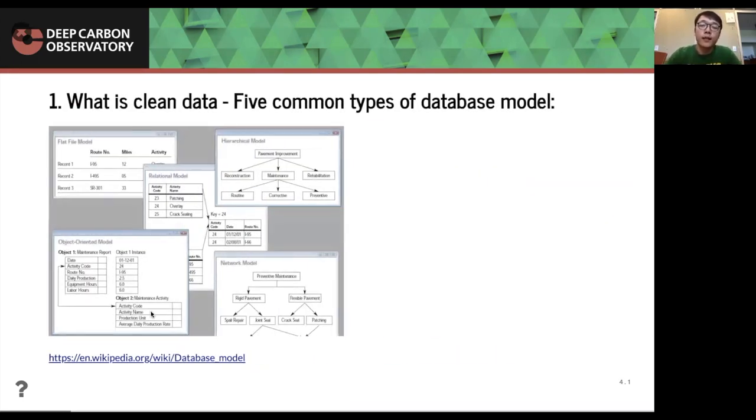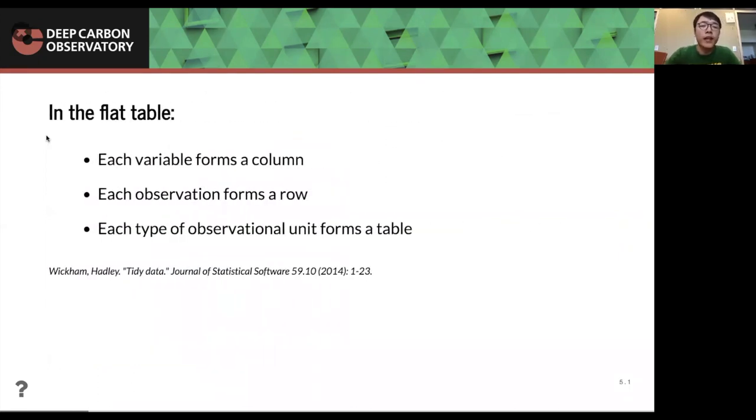Here is what is the clean data. Here are the five most common types of database model, which is a flat file model, hierarchical model, relational model, object oriented model, and the network model. In our talk, we will mainly focus on the flat file model. So in the flat file model, each variable forms a column, each observation forms a row, and each type of observational unit forms a table, which means each for each table is one kind of data, and we will analyze this set of data.